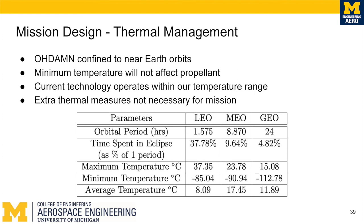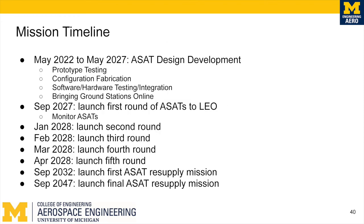Development and testing for the final ASAT design will commence in May 2022 and is expected to be completed by May 2027. During this five-year period, prototypes will be tested, the final ASAT configuration will be fabricated, and all software and hardware will be finalized and integrated. All ground stations will be fully online and integrated with ODAM. In September 2027, the first round of 60 ASATs will be launched into low Earth orbit. From September 2027 until January 2028, these first ASATs will be monitored for correct autonomous operation. If all ASATs maintain their planned orbits, the second round will be launched in January. The first ASAT resupply launch will occur in September 2032, with launches taking place every year until the final launch in 2047.